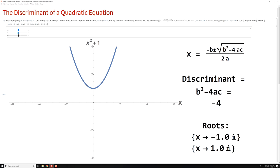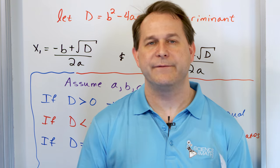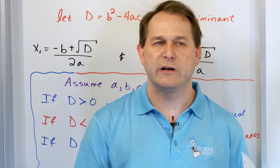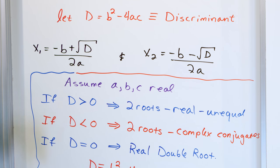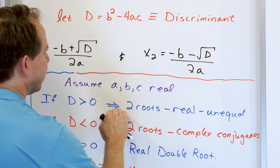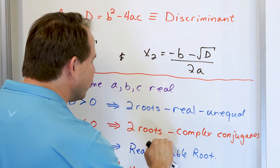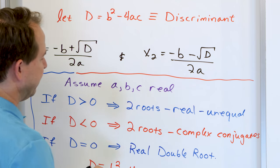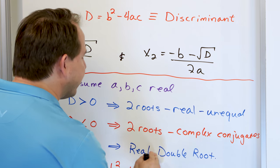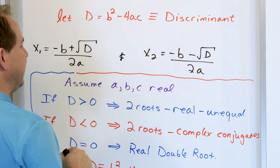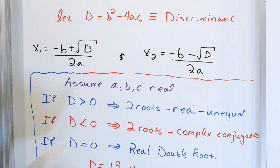Now that we've done the computer demo, let's solidify what we talked about: how the discriminant predicts what the roots will look like. If the discriminant is positive, we have two roots which are real. If the discriminant is negative, we have two roots which are complex and they're conjugates of each other. If the discriminant is exactly equal to zero, we have a double root where the graph just touches the x-axis in one location, but it counts two times — that's a real double root.